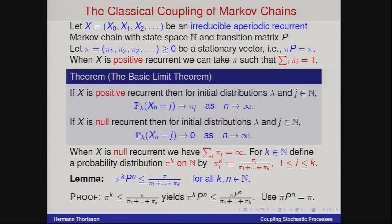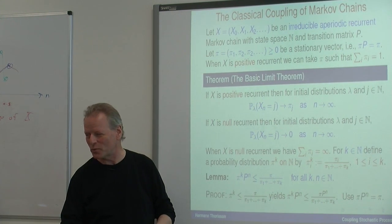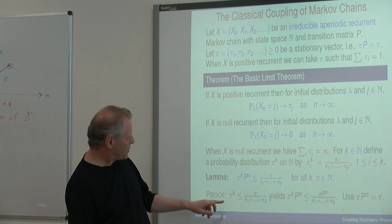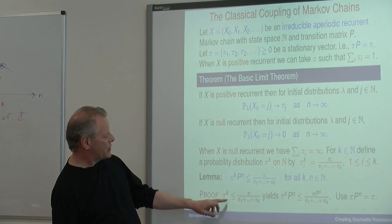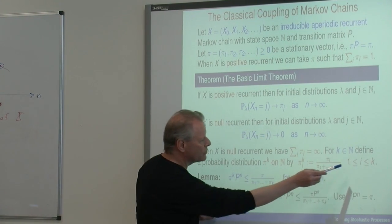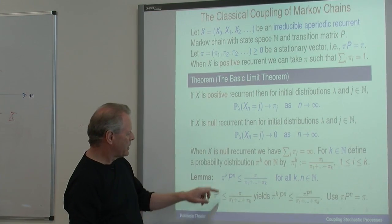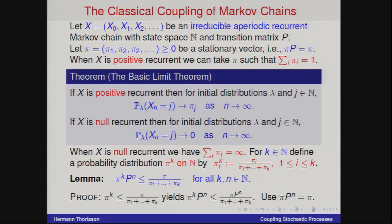So pi^k is just like pi, up to and including k. You take all the pi's and normalize within a finite space window, not time window. This is not a stationary distribution, but this is true: if you take pi^k times P^n, this will always be less than pi times P^n, whatever n is. The proof: pi^k is zero for i greater than k, so it equals pi for i up to k and is zero after — always less. Then multiply by P^n on both sides and use this to get pi there.